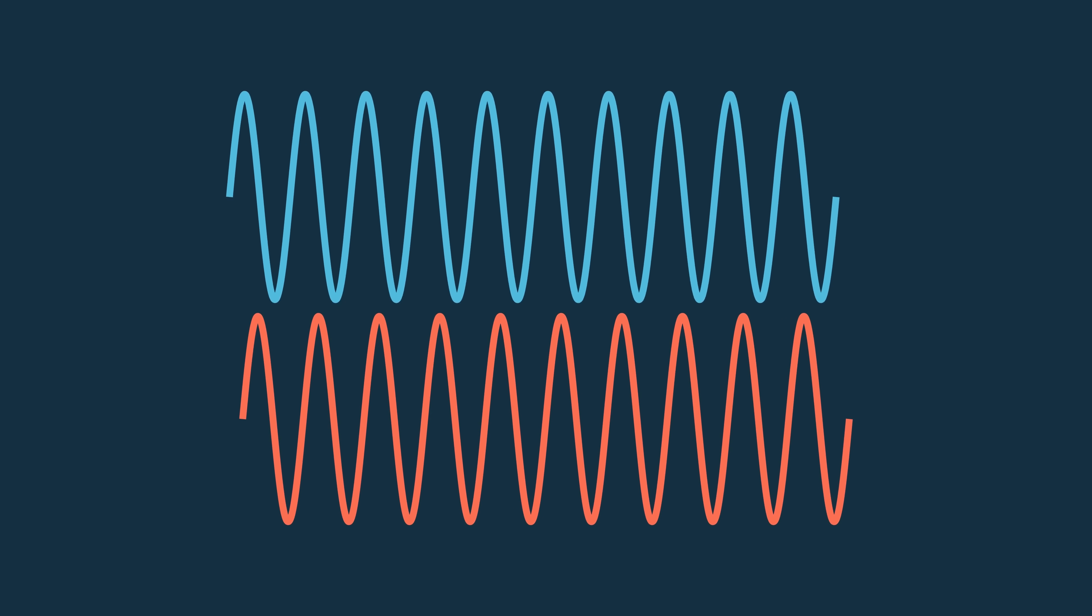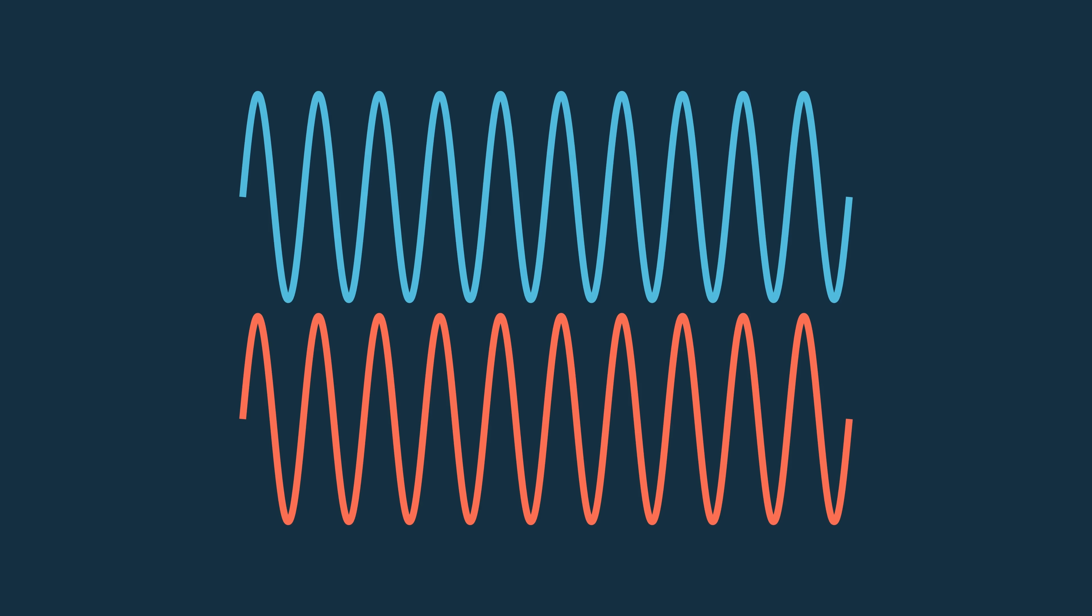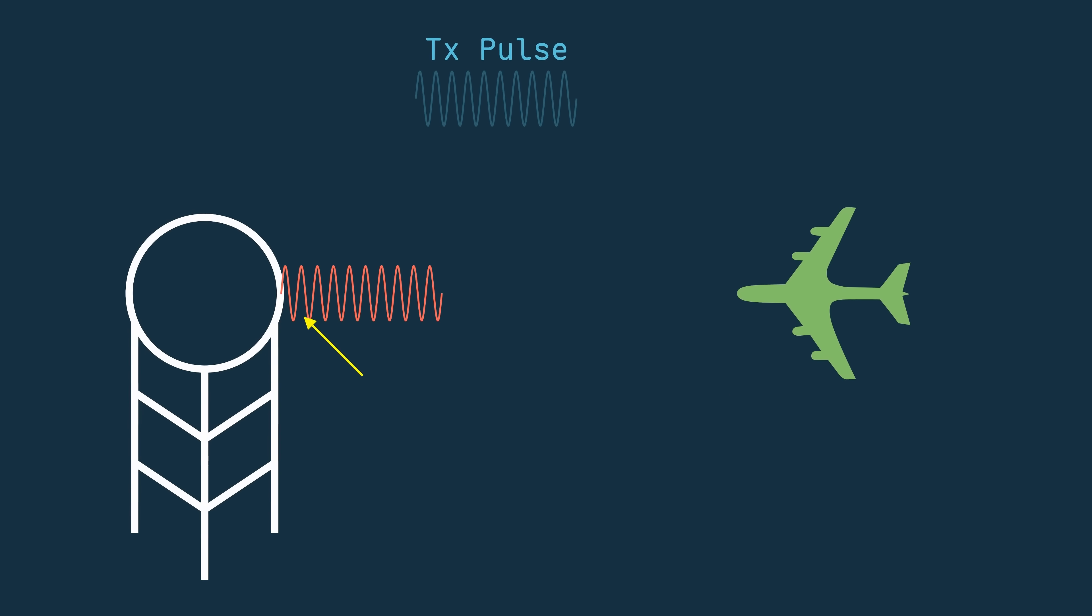If we could somehow take this received signal and line it up with the one we transmitted, we could find the first point in this pulse that was scattered off the target. But you might be thinking, wouldn't the start of the pulse always be the part that reflected off the target first? Or, in other words, this part right here that returns to the radar first?